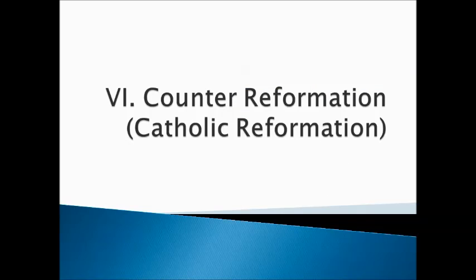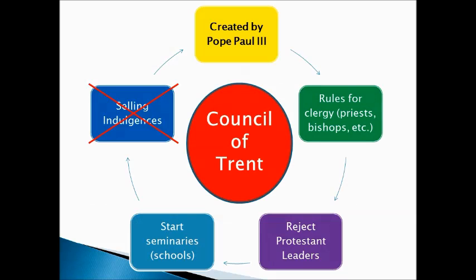Then we get the Counter-Reformation. The Catholic Church decided to change what they were doing. They called together a meeting called the Council of Trent, created by Pope Paul III. First, they set up rules for clergy — rules for priests and bishops to follow. Second, they rejected all Protestant leaders' teachings of Martin Luther, John Calvin, and John Knox. They began seminaries, which are schools to train priests. And the big one: they got rid of the selling of indulgences — indulgences were no longer allowed.